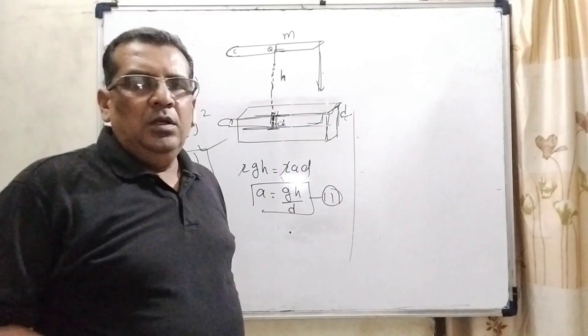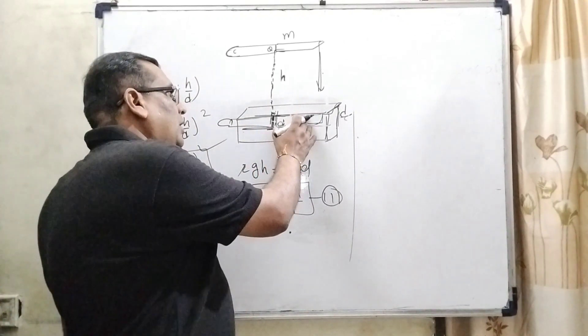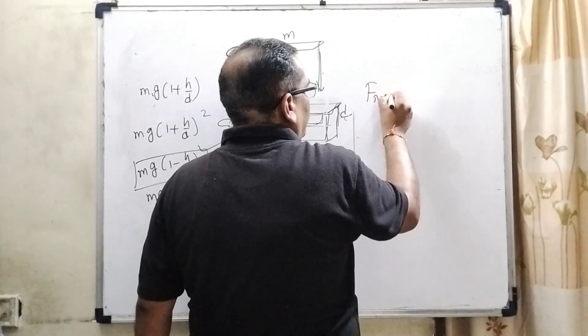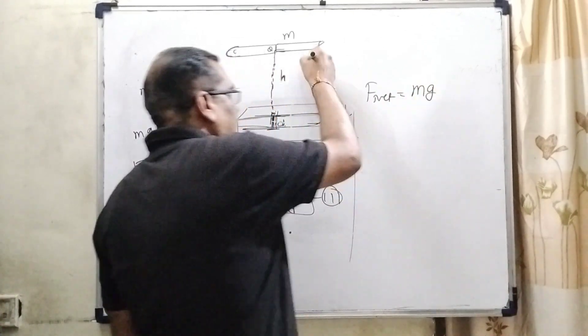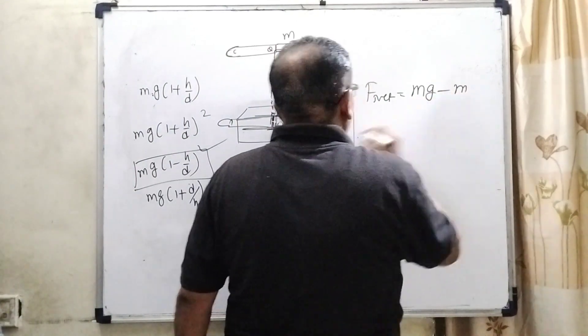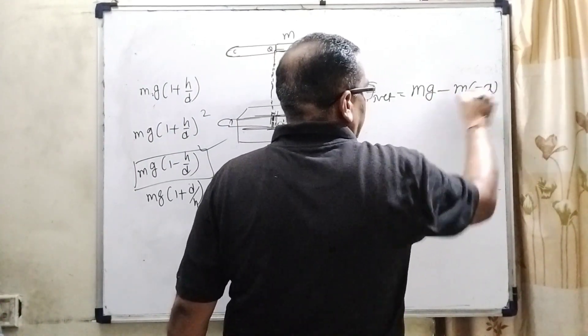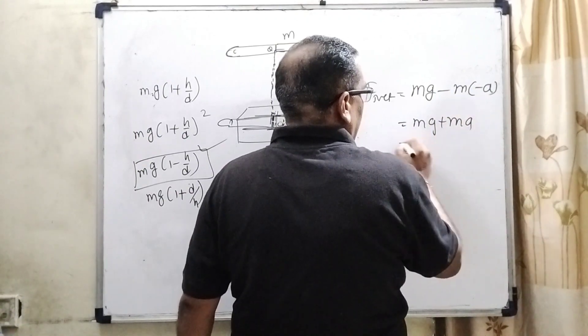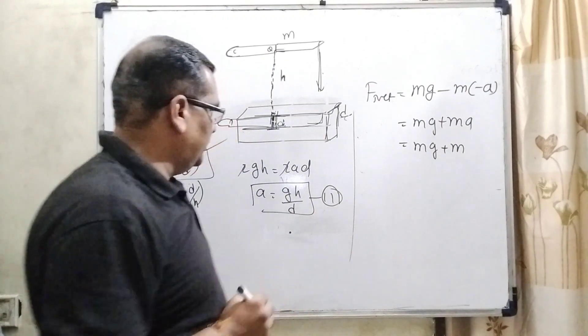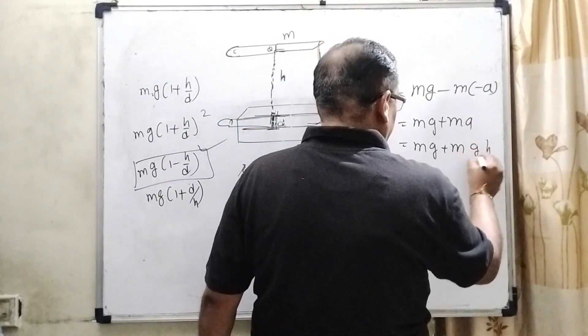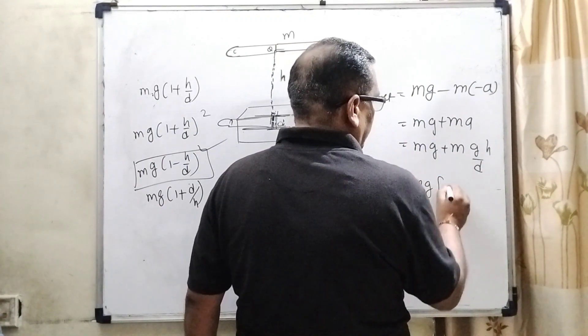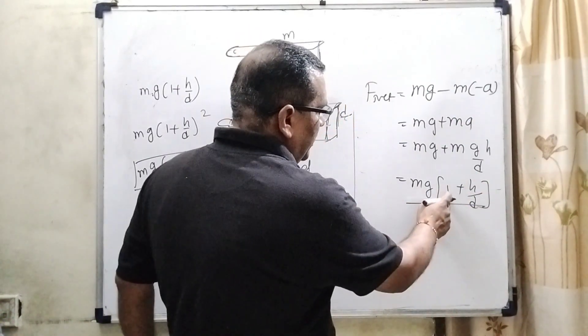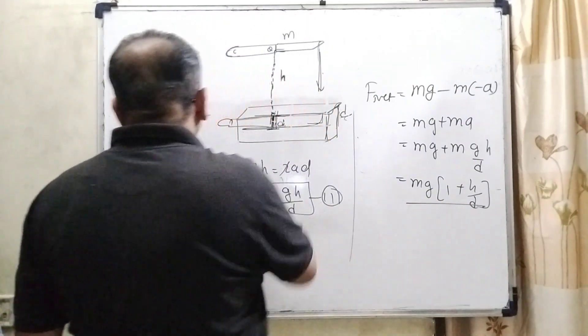In this question we have to find the resistance force of this wood applied to the knife. So here this knife is falling, the net resultant force is MG minus MA, that is the resistance force. Therefore acceleration is in negative direction of G. So here we substitute minus A. Then MG minus minus becomes plus MA. Now substitute the value of A from equation third, that is GH by D. Then MG is common. So here 1 plus H by D. So here we get MG into bracket 1 plus H by D. Let's see which option is matching here. Option A.